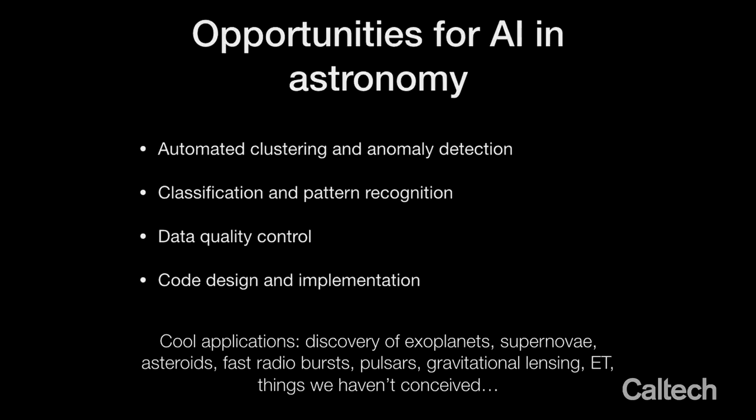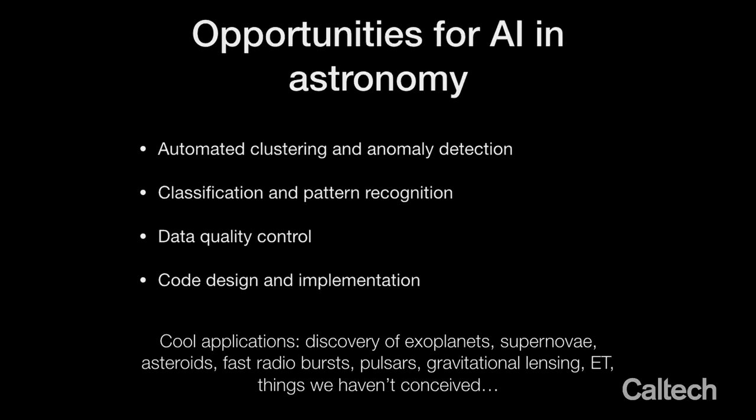There are several opportunities for AI in astronomy — this is the main message I want to get across. First and probably most importantly is automated clustering and anomaly detection: what are the outliers and what are the clusters? Second is classification — let's classify all the objects out there and recognize patterns and trends in the data. Third, we're very often faced with very messy data, so quality control becomes critical. Finally, there really is an opportunity for AI-assisted algorithmic development to push the boundaries of the logic we use to identify things, plan observations, and push forward into new discovery spaces.